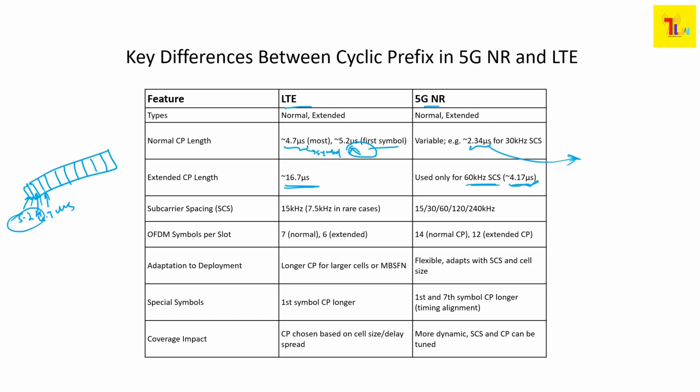Subcarrier spacing is fixed in LTE but variable in 5G NR, with up to five numerologies available. Per slot, LTE has 7 symbols for normal CP and 6 for extended CP, whereas 5G NR has 14 for normal CP and 12 for extended CP. For extended CP, LTE has around 16.7 microseconds CP length, while for 5G NR at 60 kHz subcarrier spacing it comes down to around 4.17 microseconds. From a deployment perspective, longer CP values result in larger cell and MBSFN cell support.